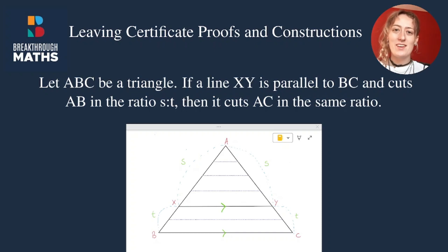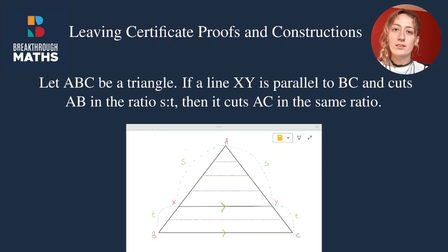Hello, my name is Niamh. I am from Breakthrough Maths, and welcome to this step-by-step instructional video on how to prove the following. Let ABC be a triangle. If a line XY is parallel to BC and cuts AB in the ratio of S to T, then it cuts AC in the same ratio.